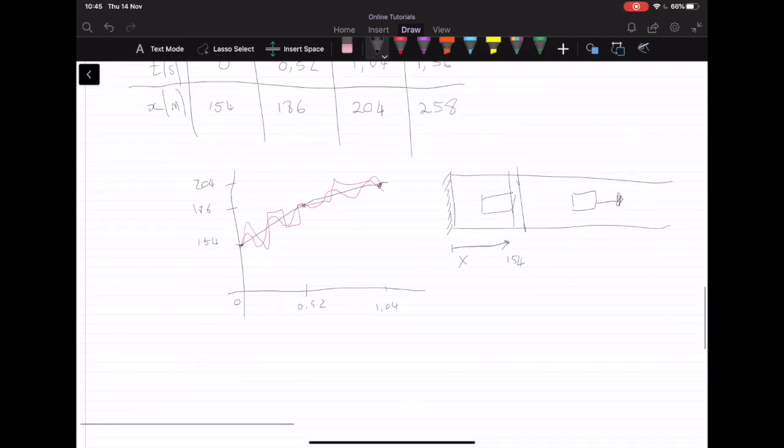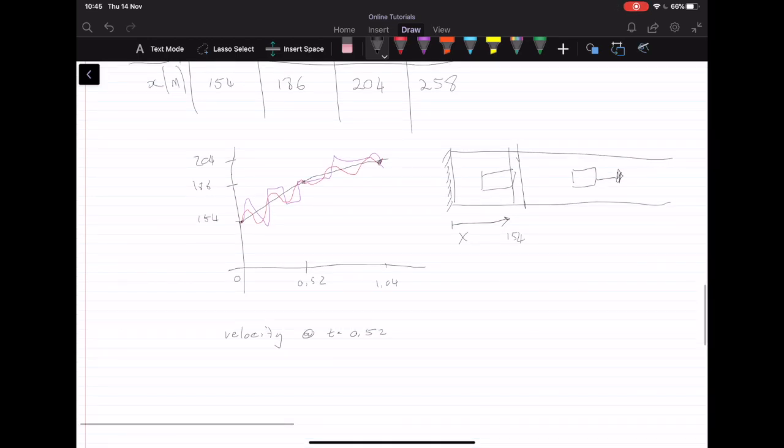So let's say we want to know the velocity at t equals 0.52. So we also know just assuming constant acceleration, we can say that speed equals distance over time. And we know that the distance is given in x over t.